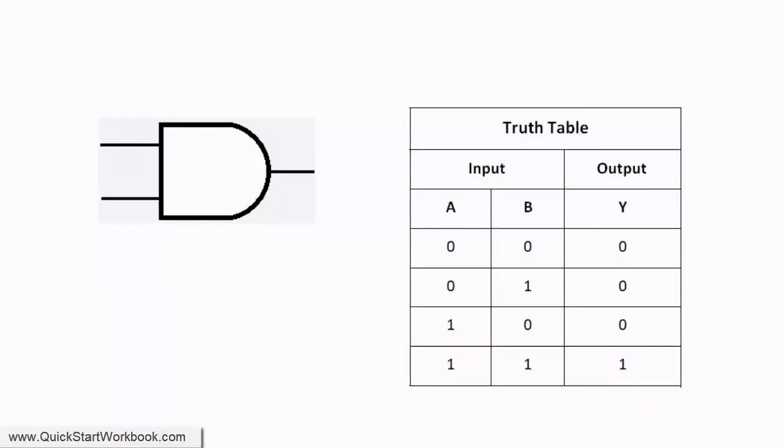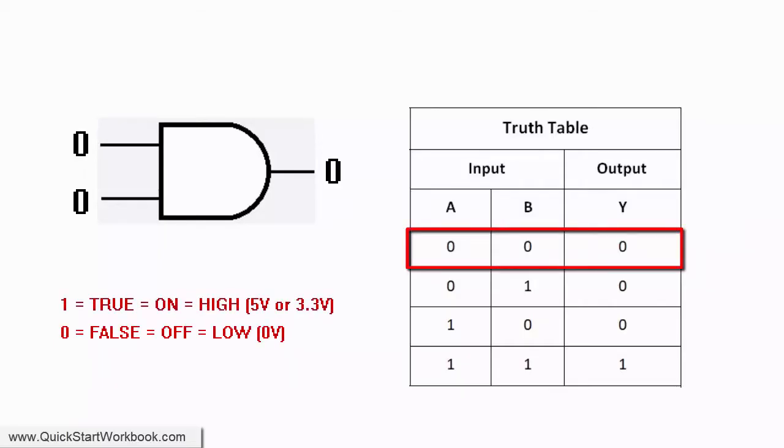The truth table shown on the right lists the four possible input combinations for A and B, along with the resulting output Y.